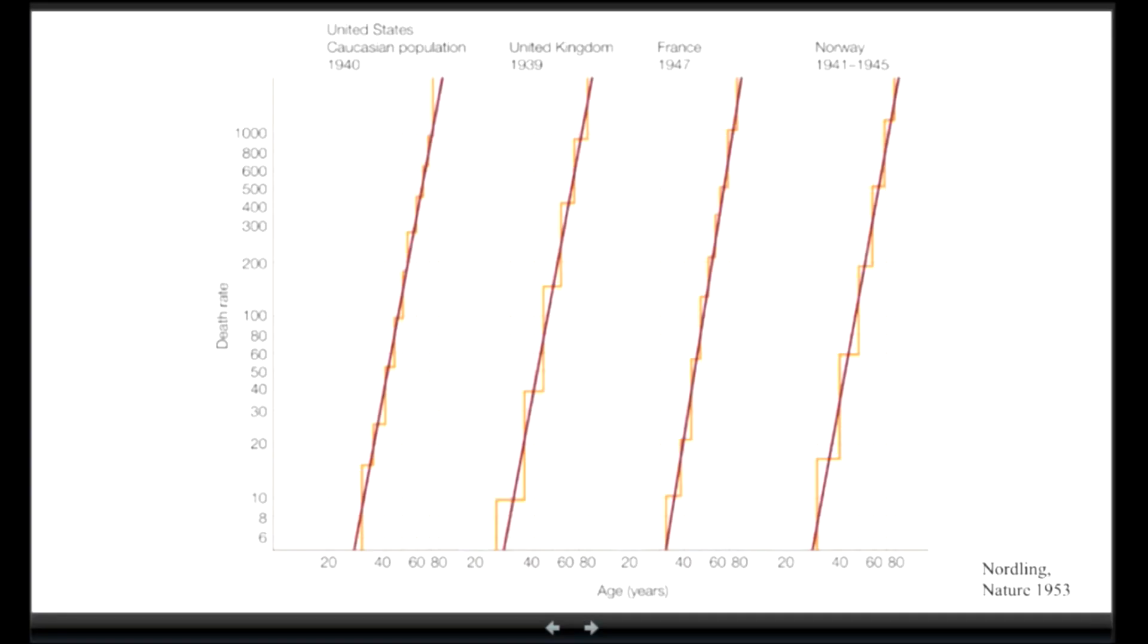So here, I'm going to start with an observation that was done in 1953 by a statistician. So it's a guy that didn't know anything about cancer, but he was just looking at the number of people who were dying from different cancers, and there was something that everyone knows here is that usually older people, they die much more from cancer than younger people.